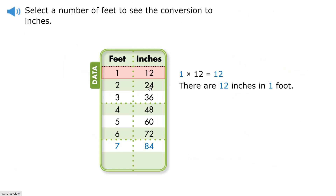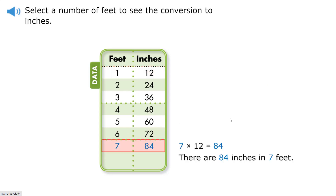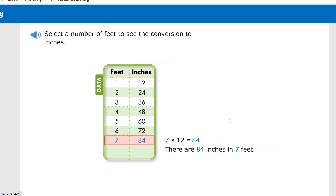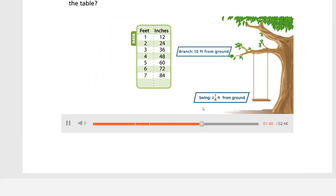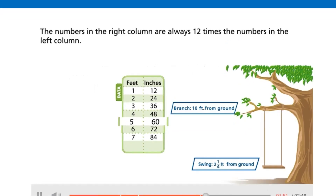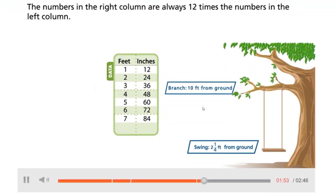We know that we are converting from feet to inches by multiplying by twelve. When we're going from a big unit to a smaller unit, we're going to multiply, because we're making it into smaller-sized pieces. Two times twelve gives us twenty-four. Three times twelve gives us thirty-six. Seven times twelve equals eighty-four. There are eighty-four inches in seven feet. The numbers in the right column are always twelve times the numbers in the left column.